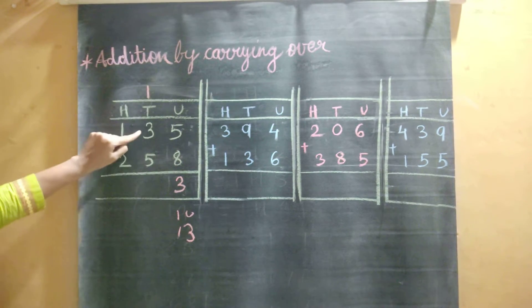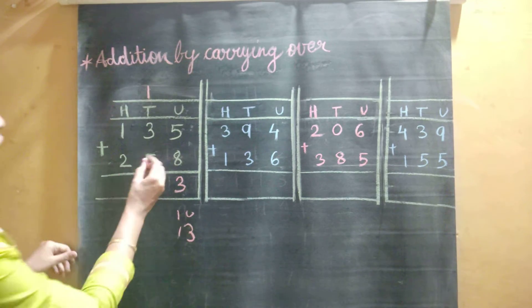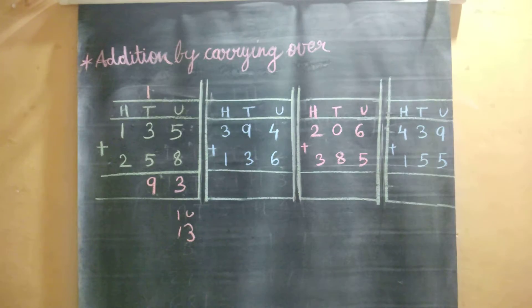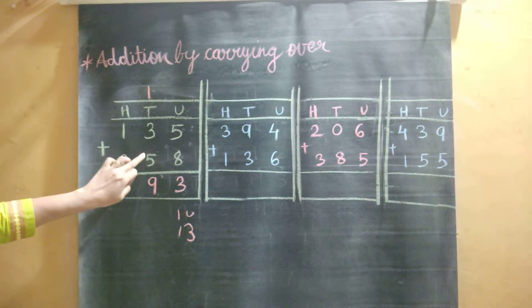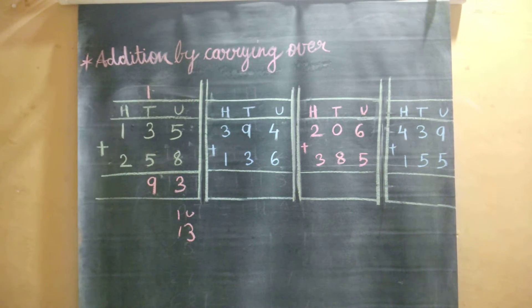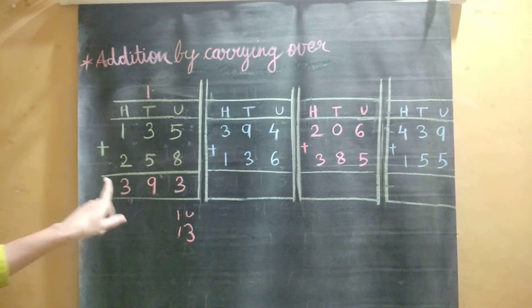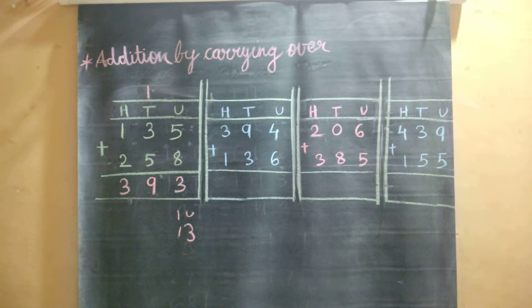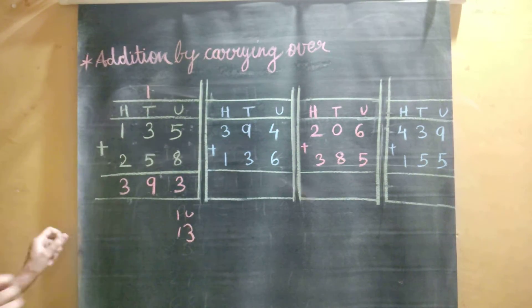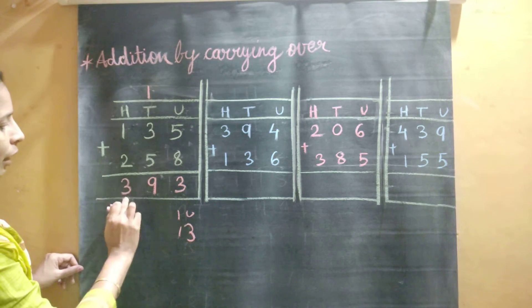Now there are already 2 digits — 3 and 5 — at the tens place. But now we added 1 more by carrying over, so 3 plus 5 is 8, and 8 plus 1 is 9. So the answer here will be 9. Last is the addition at the hundreds place: 1 plus 2 is 3. So the answer is 393.